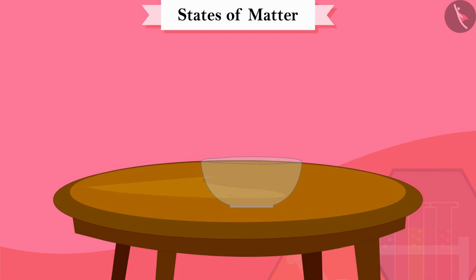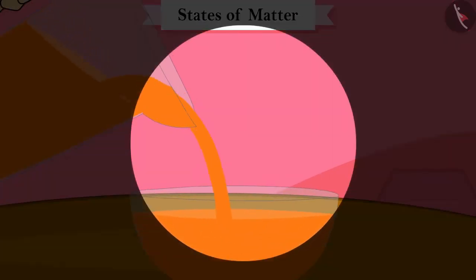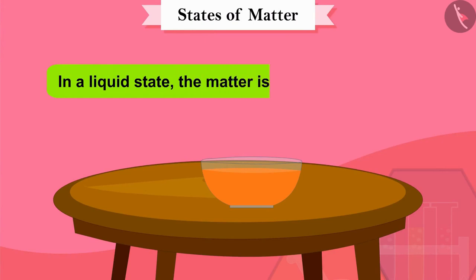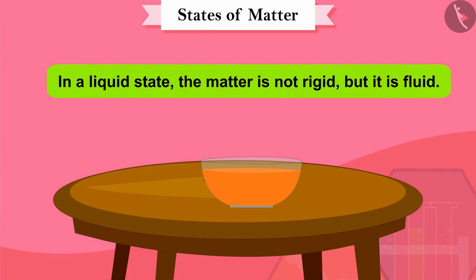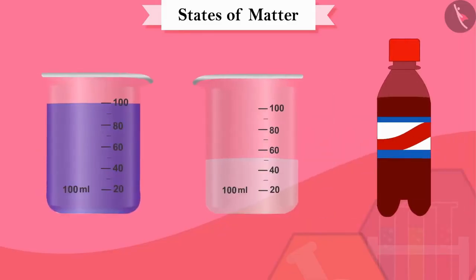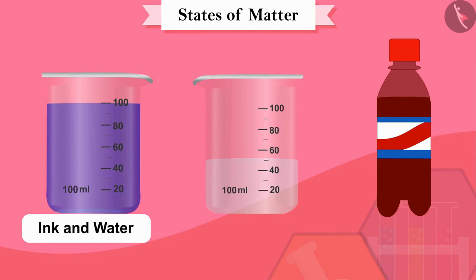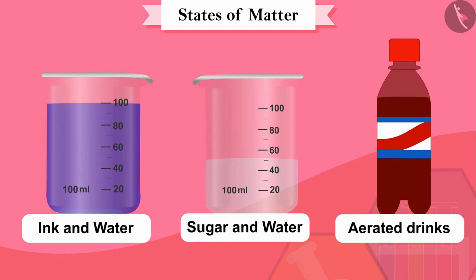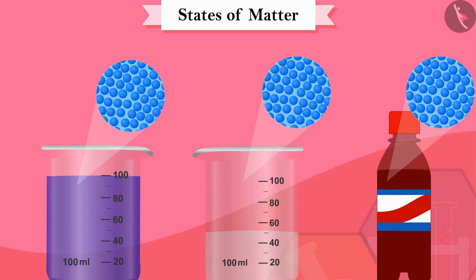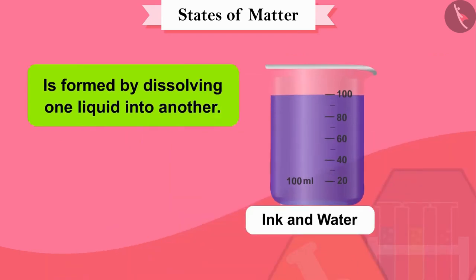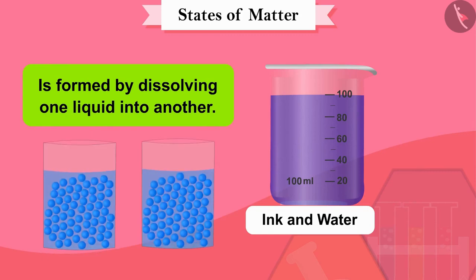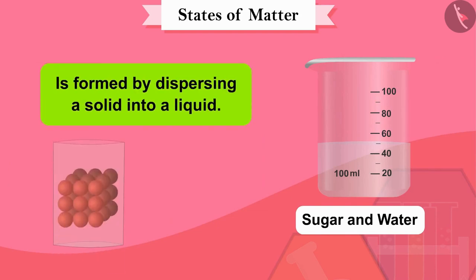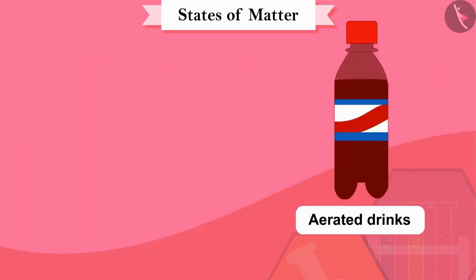Does the juice flow easily when poured from the jug into the glass utensils? Yes — this means that in a liquid state matter is not rigid but it is fluid. Now let us look at these liquid objects: ink and water solution, sugar and water solution, and aerated drinks — all in liquid state. The ink and water solution is formed by dissolving one liquid into another, and a solution of sugar and water is formed by dispersing a solid into a liquid.